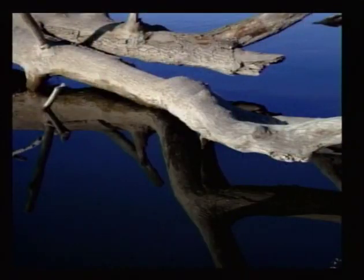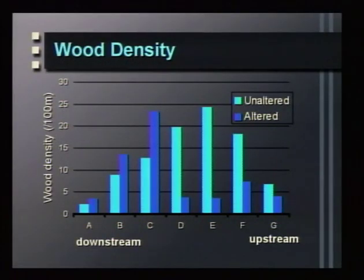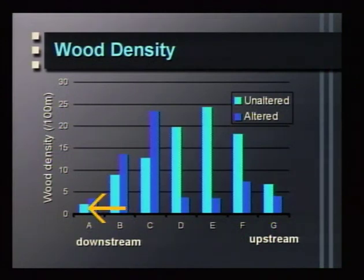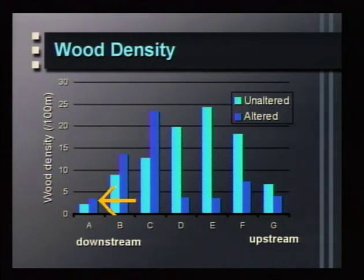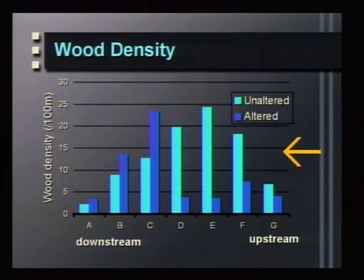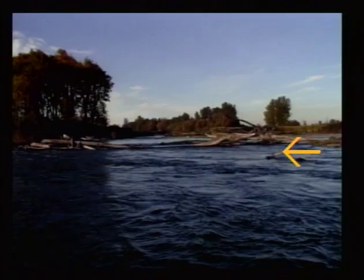Riparian forests provide more than floodplain habitat complexity — they also provide large wood, which is an important component of aquatic habitat with many fish species associated with it. In the Willamette River, we looked at seven pairs of sites comparing unaltered forest to riparian forests altered to agricultural, residential, or urban land. We found much higher volumes of wood in the unaltered or intact riparian forest than in the altered riparian forest.